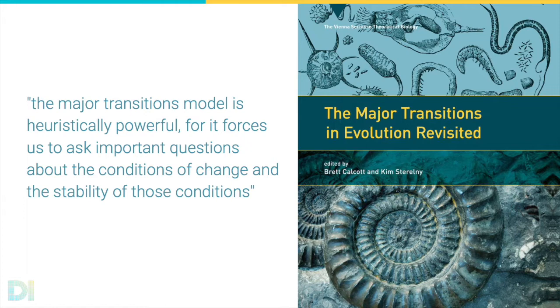We hypothesize that the evolution of cognition can be modeled in a similar way. The purpose of this framework is to explore the validity of this hypothesis. Our proposal is that there are a few important transitions which have shaped the space of what is possible for different kinds of animal minds.